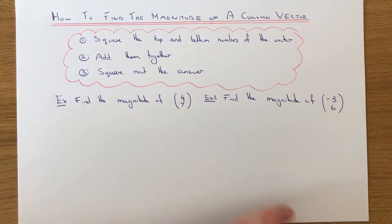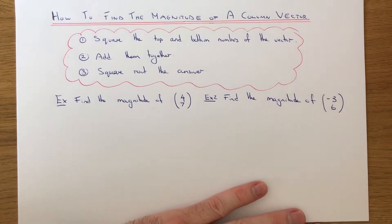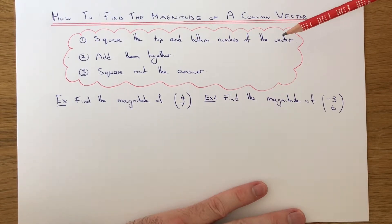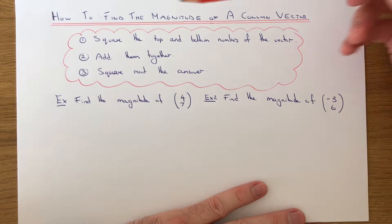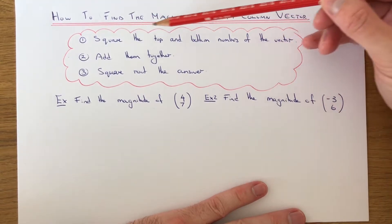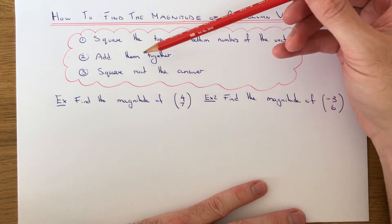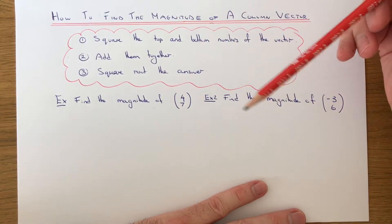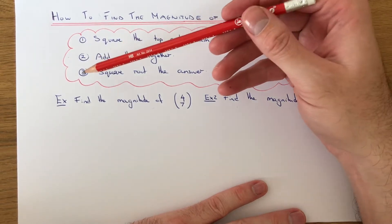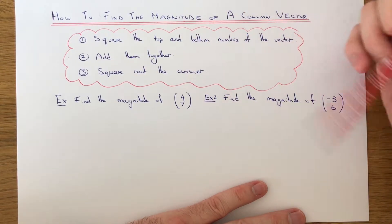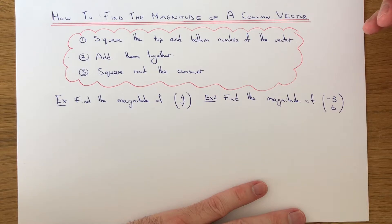Hi, today I'm going to show you how to work out the magnitude of a column vector. To do this, follow these three easy steps. Step 1: square the top and bottom numbers of the vector. Step 2: add these two numbers together. Step 3: square root the final answer.